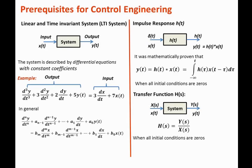From the definition of the transfer function, using cross-multiplication, we can state that Y(s) = H(s)·X(s). We were able to get rid of the convolution integral by converting the system from the time domain to the complex domain. That is why the transfer function is such a powerful tool in control engineering — the output is simply the transfer function multiplied by the input in the Laplace domain.